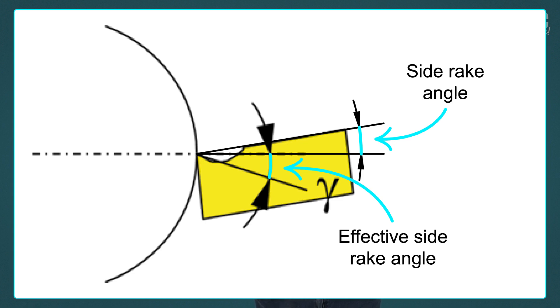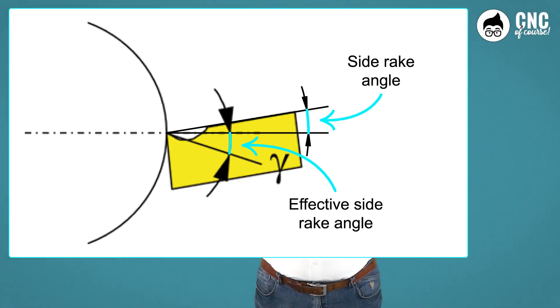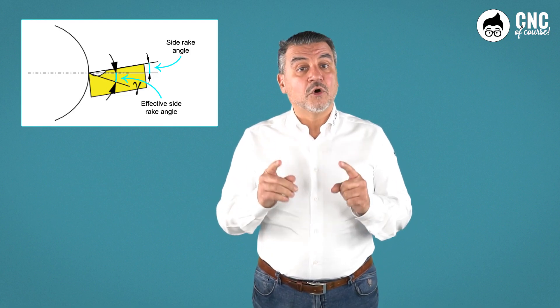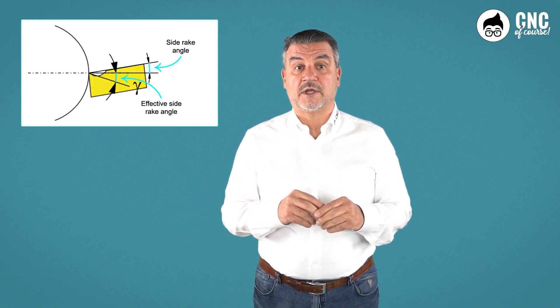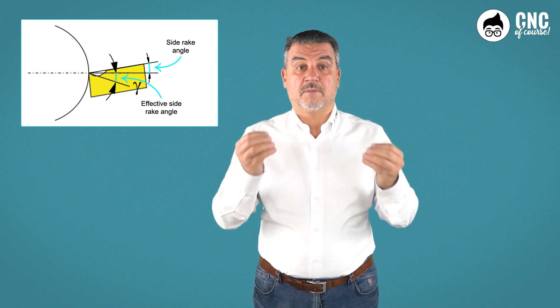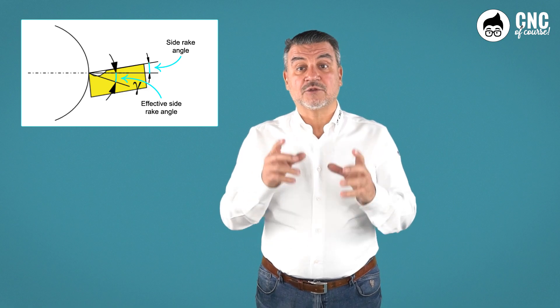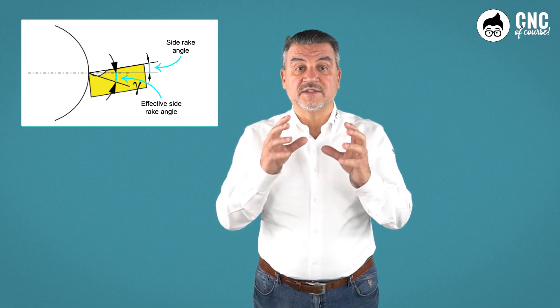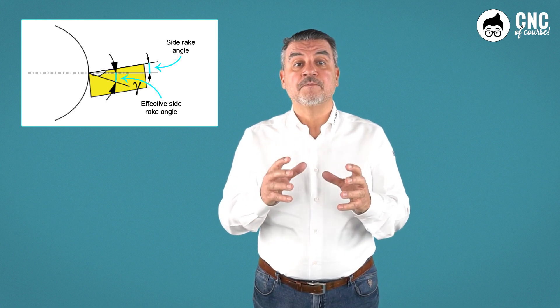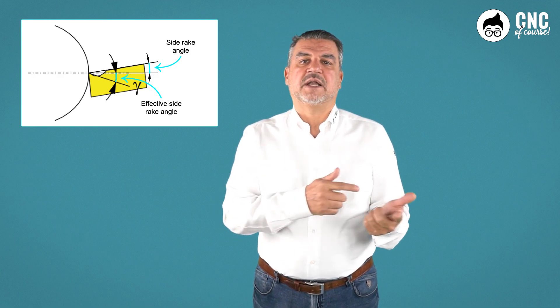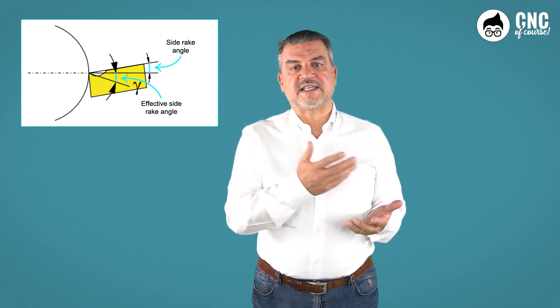The chip breaker geometry, as in this case, could even transform an insert that is positioned negatively on the tool into an actually positive tool, thanks to its geometry. We can therefore say that chip breaker geometries play a fundamental role on the rake angle, to such an extent that in some cases, a tool that had a negative rake angle insert mounting can become positive. So, as a good operator and programmer, if you are going to be asked to choose a tool, you will need to be familiar with the tool, but also with its geometry. And you will need to use this information to your advantage.